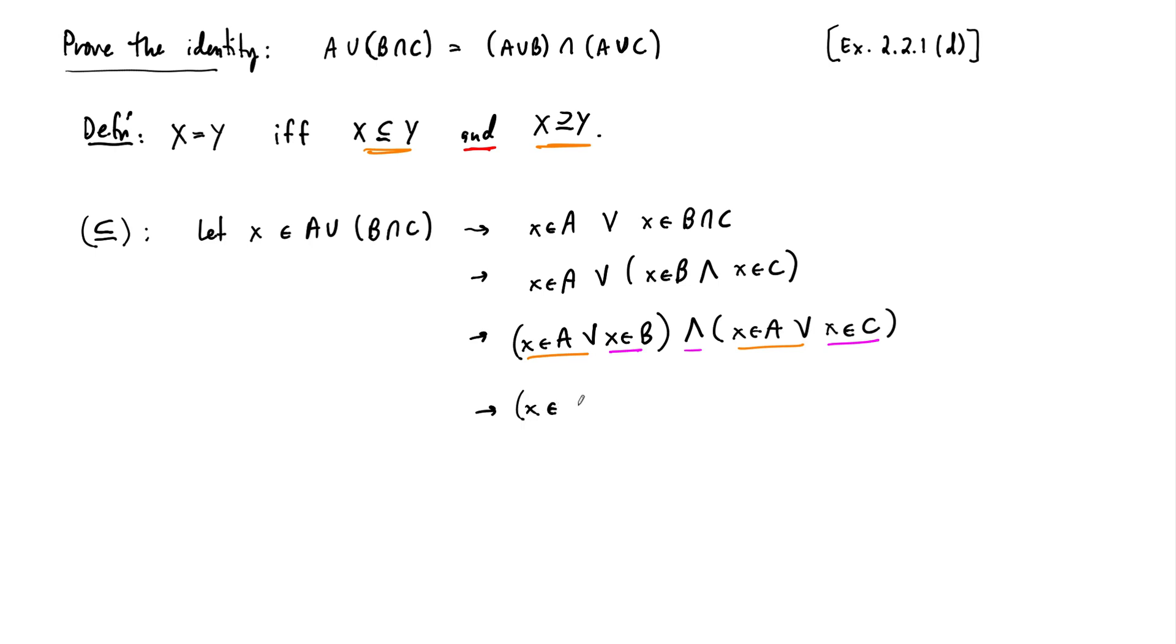And so another way to write this is that X is in A or X is in B, and X is in A or X is in C. And at this point, we can just rewrite these things one by one. So this one says now that X is in the union of A and B, or X is in the union of A and C. And then one more step from here, you just combine all this. So this means that X is in the union of A and B intersected with the union of A and C. So that's containment that way.